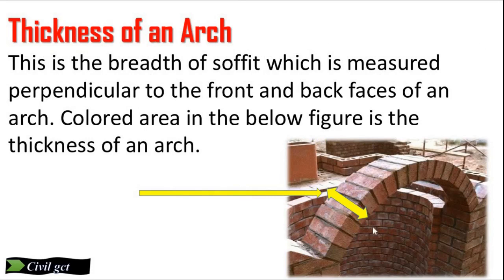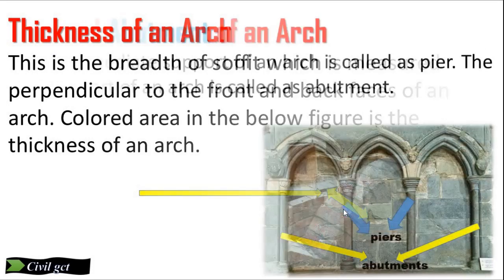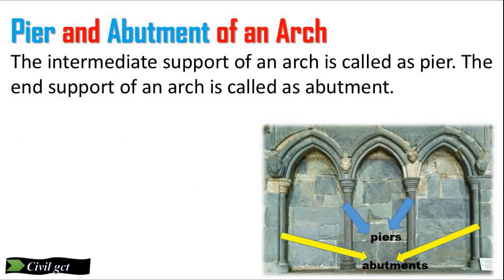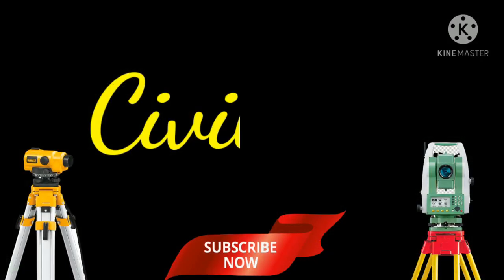Thickness of an arch: this is the breadth of the soffit which is measured perpendicular to the front and back faces of an arch — the colored area in the figure is the thickness of an arch. Pier and abutment of an arch: the intermediate support of an arch is called a pier, and the end support of an arch is called an abutment. If you are new to my channel, please subscribe. See you in the next video.